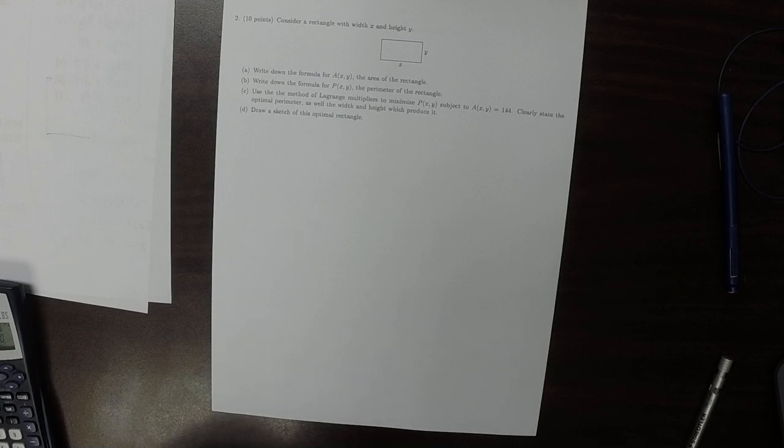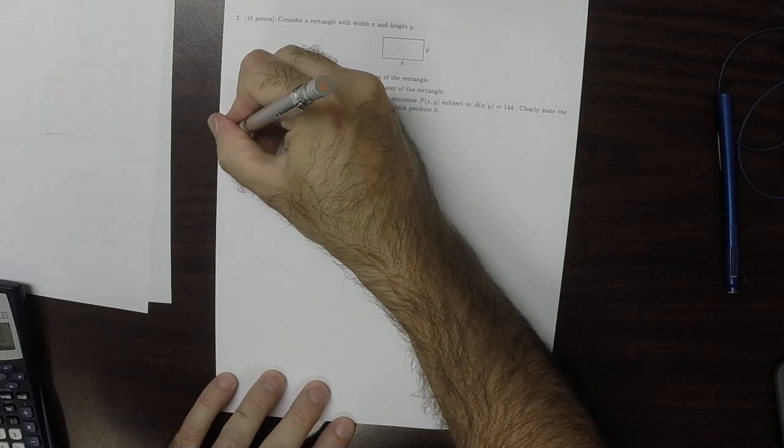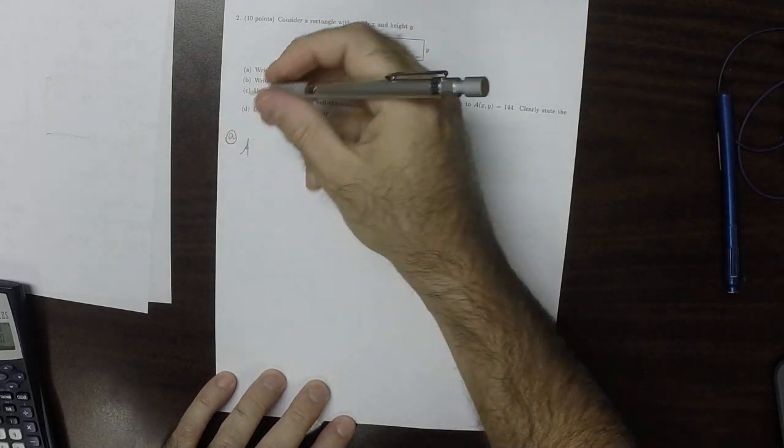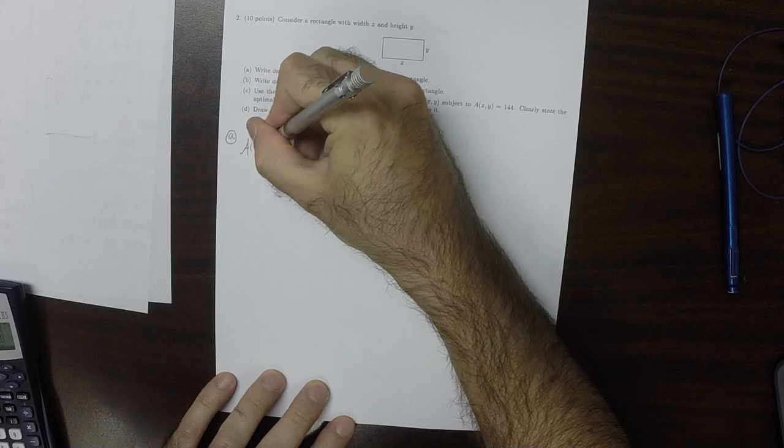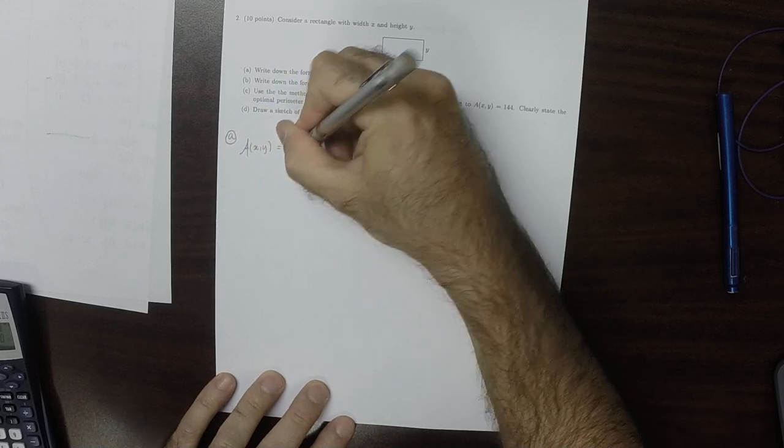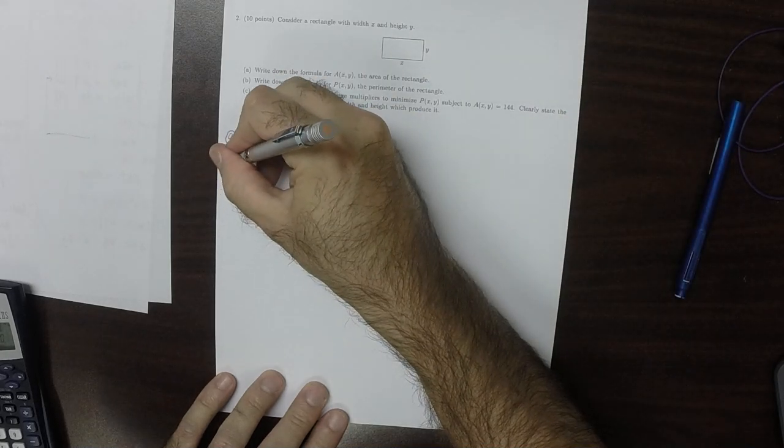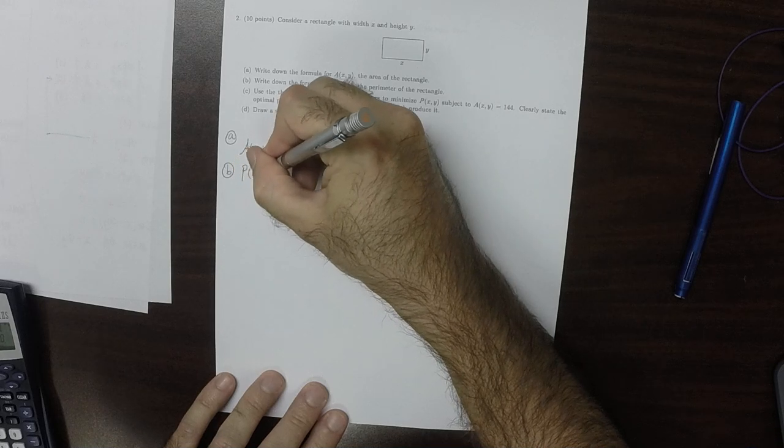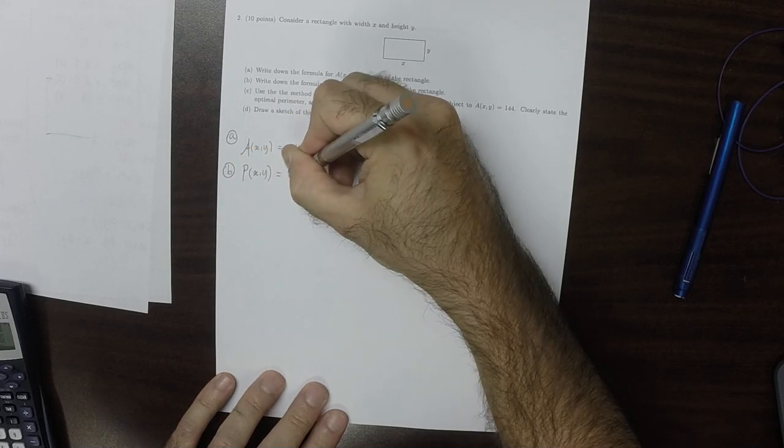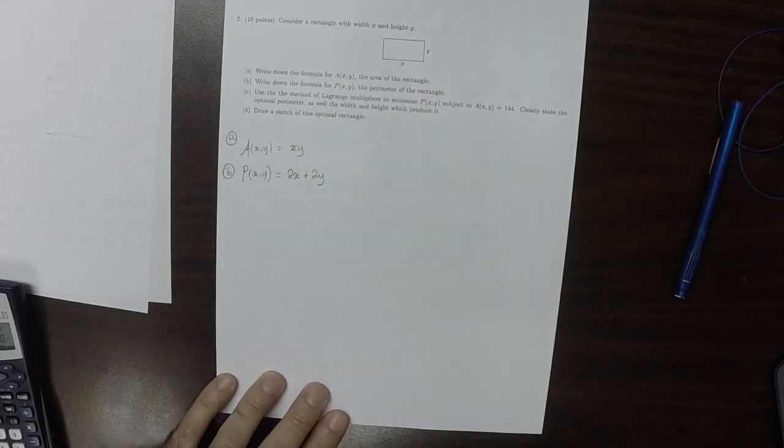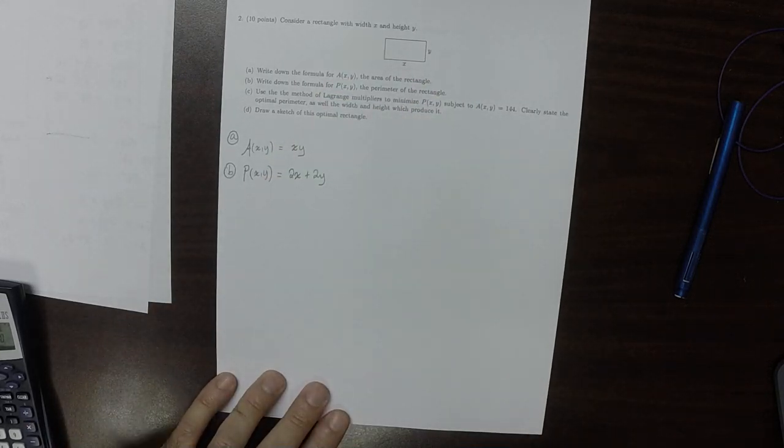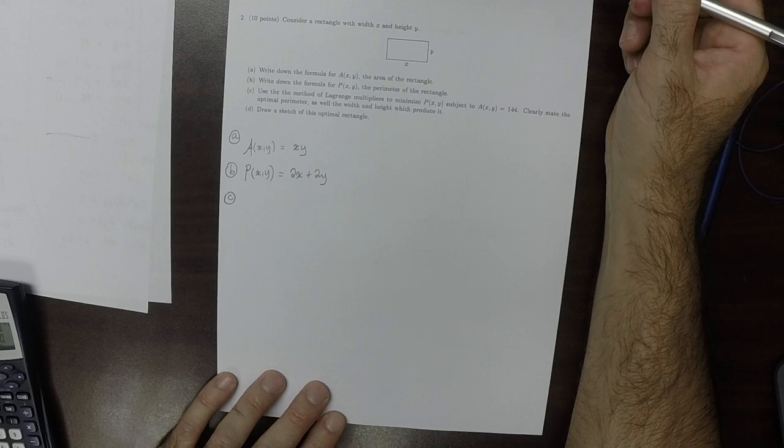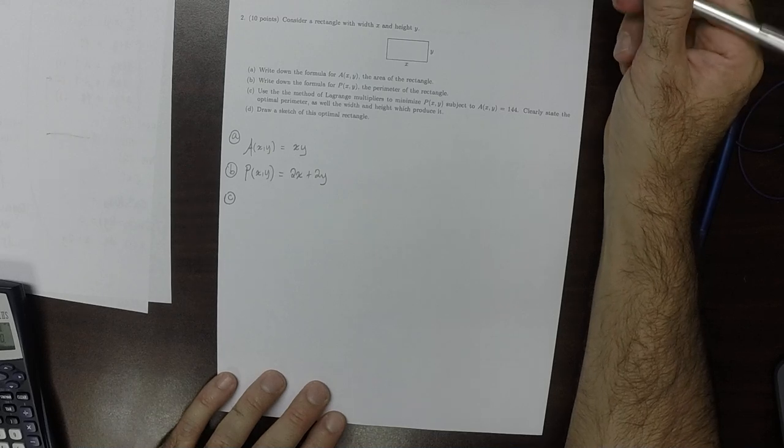Question two. So the area as a function of x and y is xy. That's the answer to part a. Part b, the perimeter as a function of x and y is 2x plus 2y. We want to minimize p subject to a.